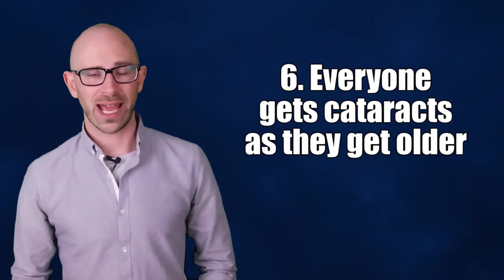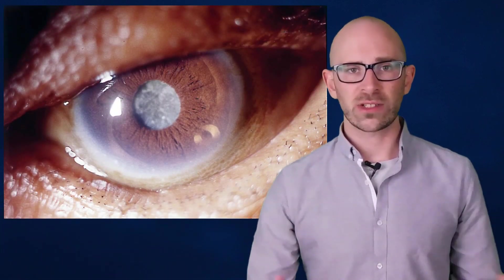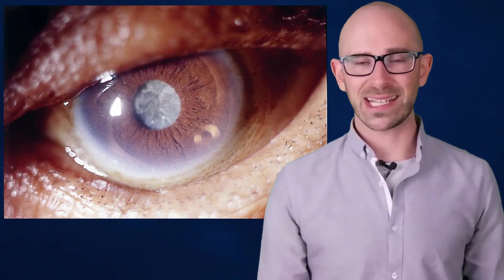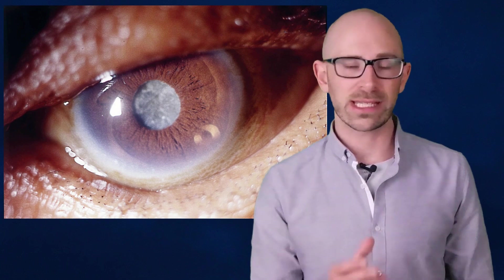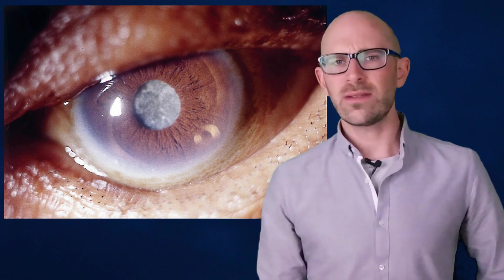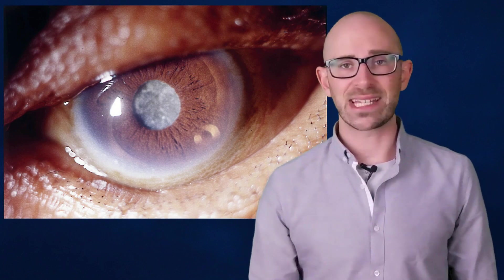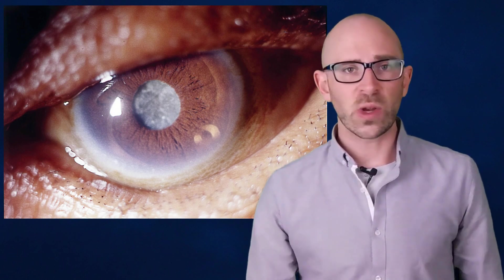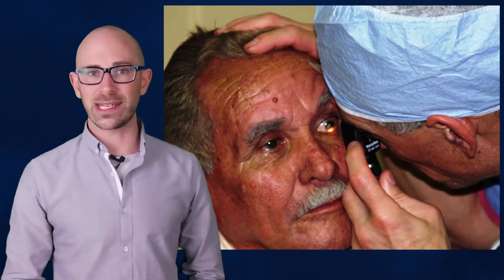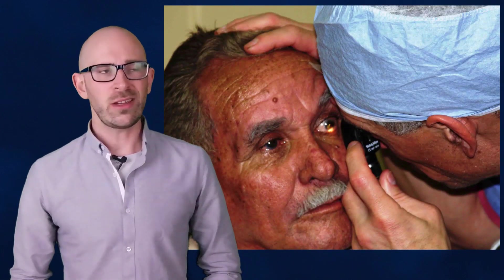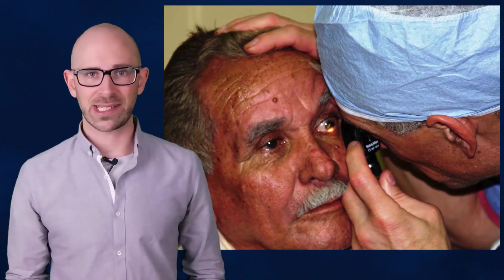Everyone gets cataracts as they get older. People don't realize that cataracts are just a normal consequence of getting older and everyone gets them at some point in their life. You can think of cataracts as being similar to getting gray hair in that it is just a normal part of aging. The average age people first get cataracts is about 70 years old and by age 80 you are guaranteed to have cataracts.